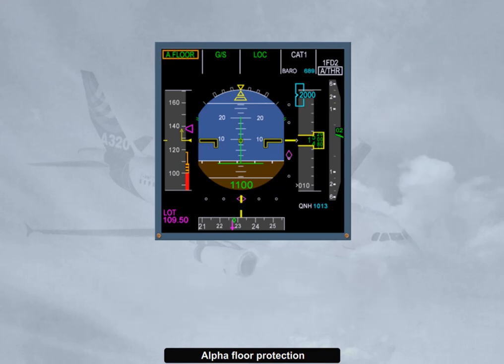When exiting the alpha-floor conditions, the autothrust mode reverts to TOGA lock mode, which indicates that TOGA thrust is locked regardless of thrust lever position. To regain thrust control, you have to switch off the autothrust. You then have manual control of the thrust and may re-engage the autothrust when convenient.